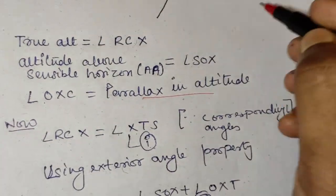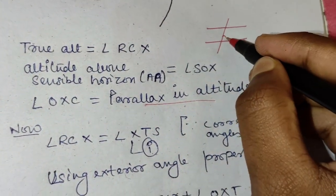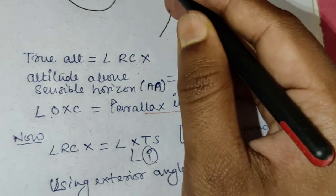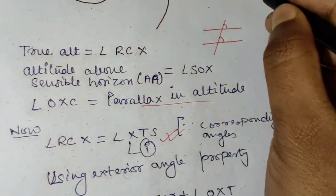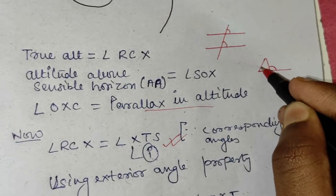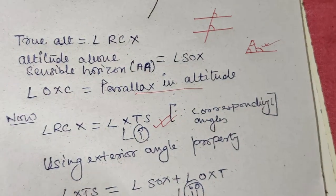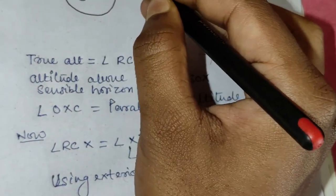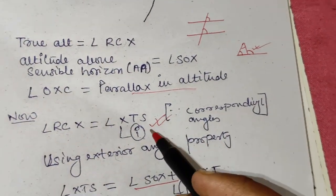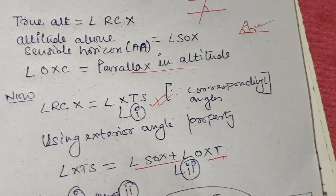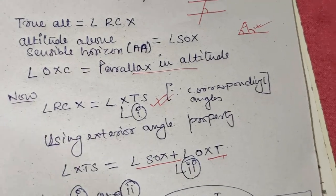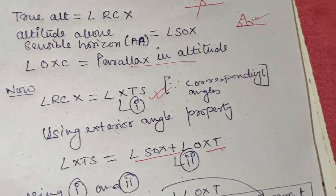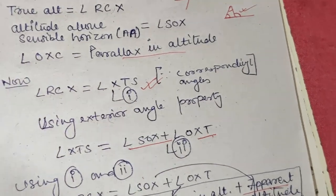True altitude is angle RCX, apparent altitude above the sensible horizon is angle SOX, and angle OXC is the parallax in altitude. Since two parallel lines have equal corresponding angles, angle RCX equals angle XTS. By the exterior angle property of a triangle, angle XTS equals angle SOX plus angle OXT. Therefore, using both results, true altitude equals apparent altitude plus parallax in altitude — so parallax is always additive.